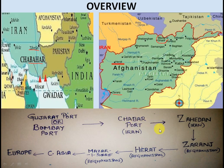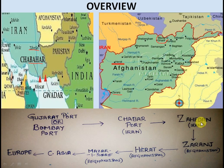From Gujarat, the ship goes to Chabahar port for unloading. Then trucks are loaded and take the Zahedan road route. The rest of Iran has a developed rail network, and through Azerbaijan the network connects to the broader region.